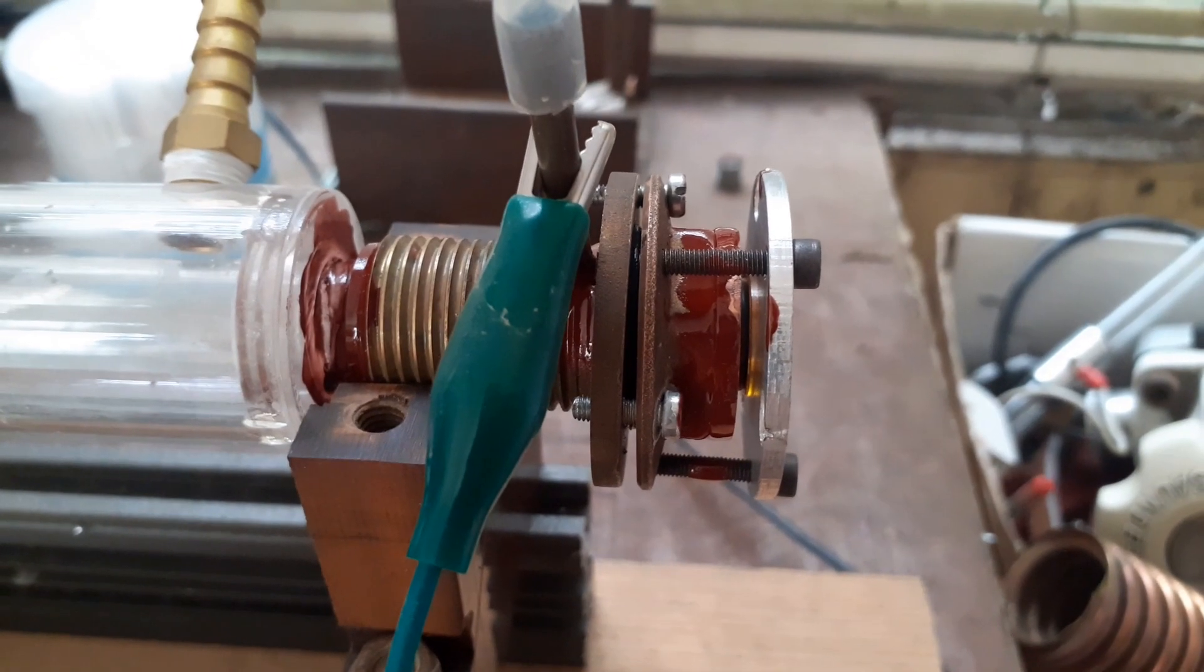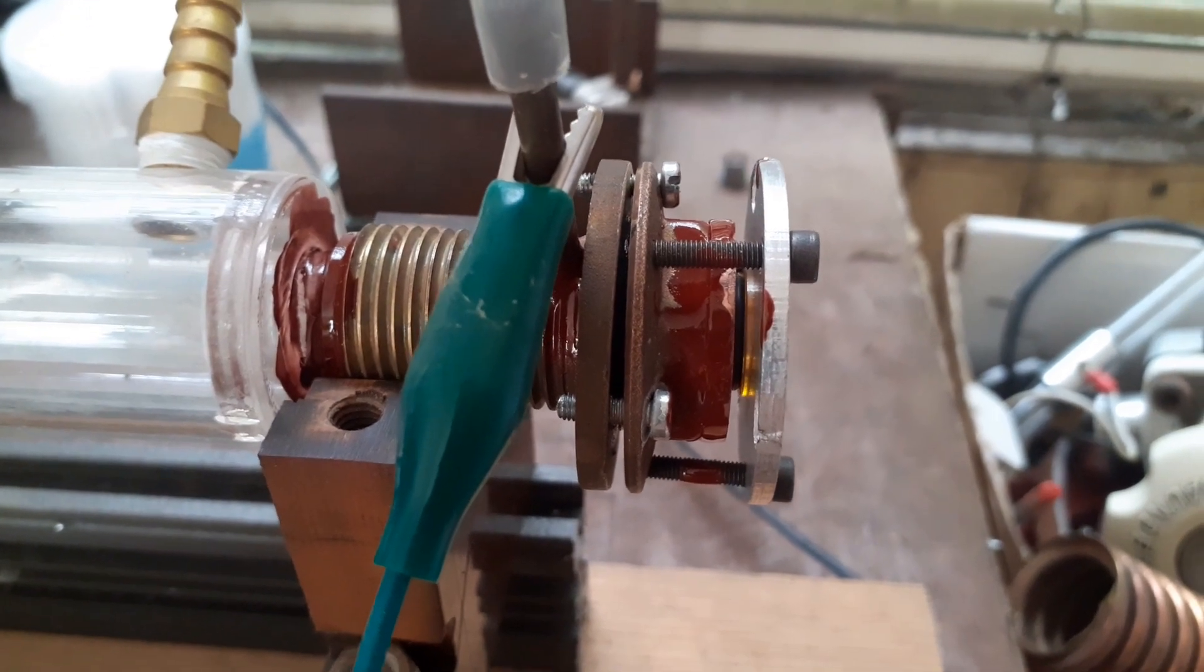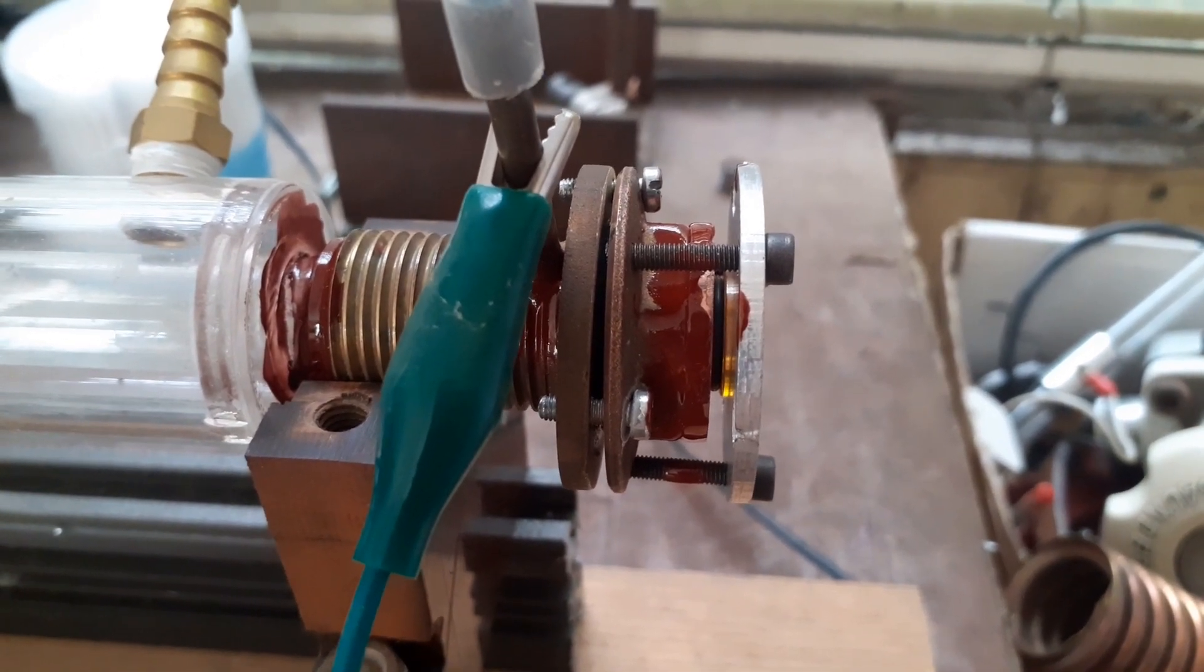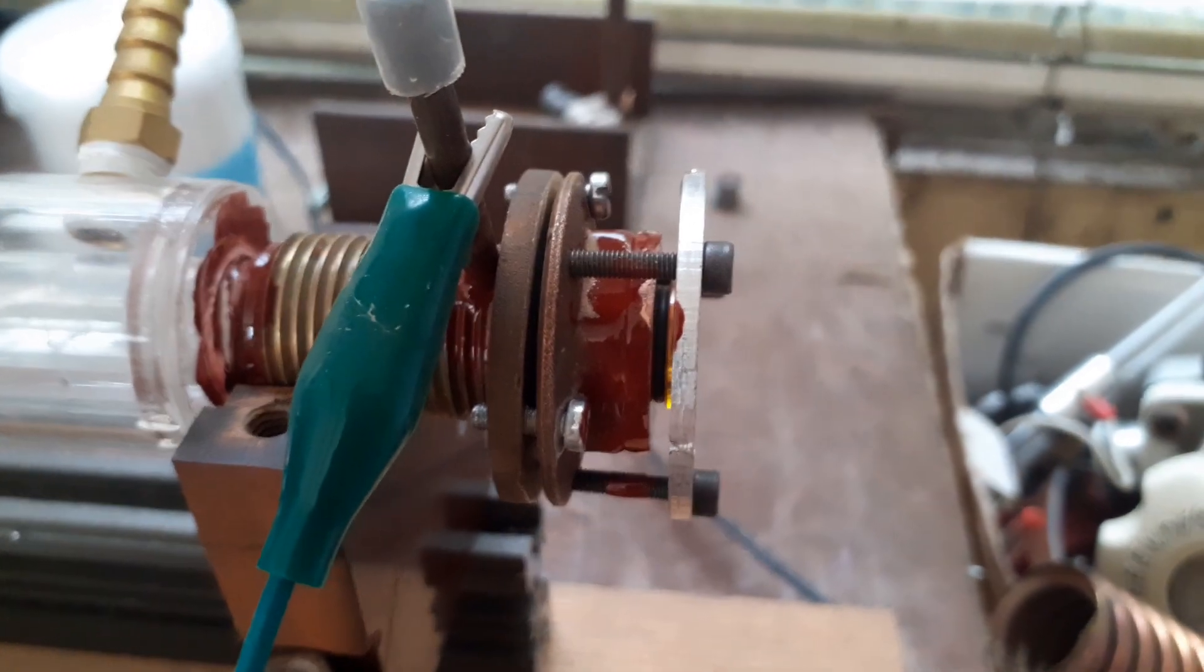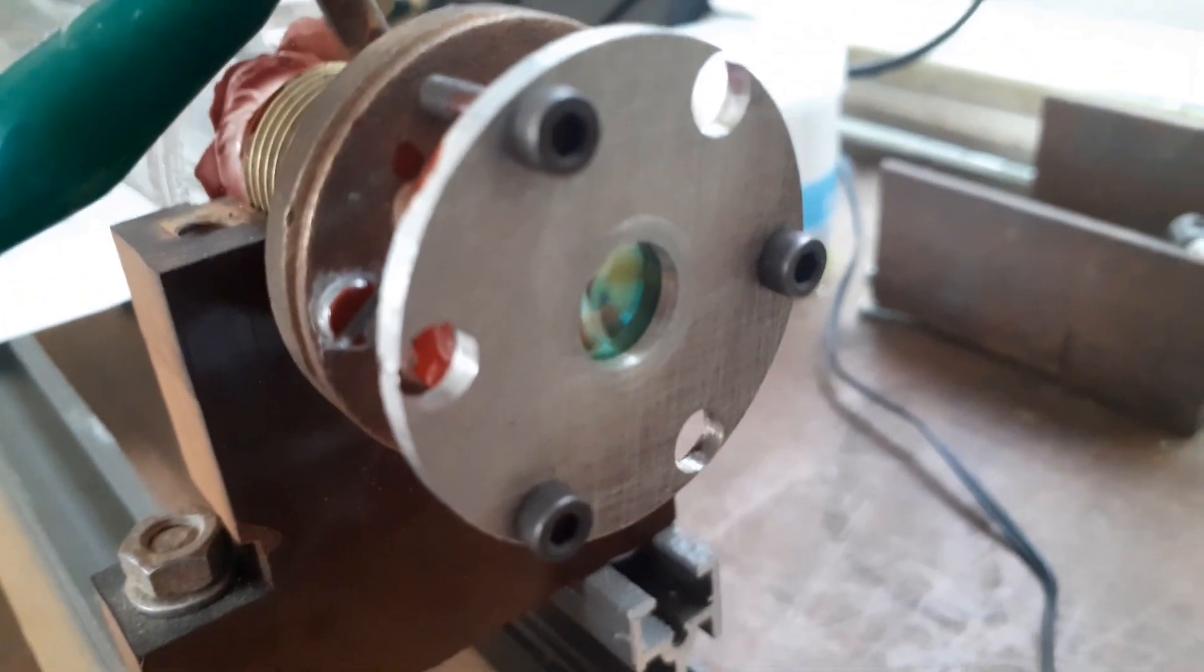So this is the other end, output end. Another copper mirror with a 2.5 mil hole and a little o-ring, and then a zinc selenide flat window. That's the bit there.